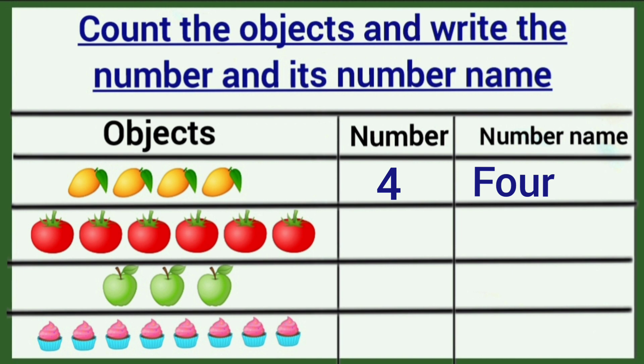Next one, how many tomatoes are there? Let's count. One, two, three, four, five, six. Write six here. Six spelling, S-I-X.